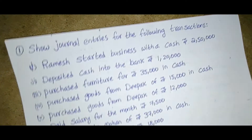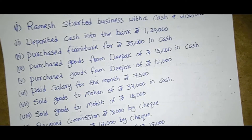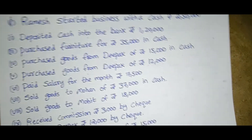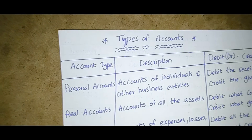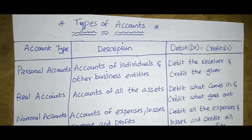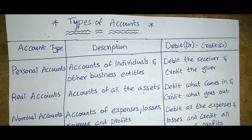We have prepared the journal entries for the given question. Next we will prepare the ledger. Before starting the ledger, we have to identify the accounts, because in the ledger we prepare individual tables. We have to identify the type of account for each particular entry — that is the specialty of the ledger.